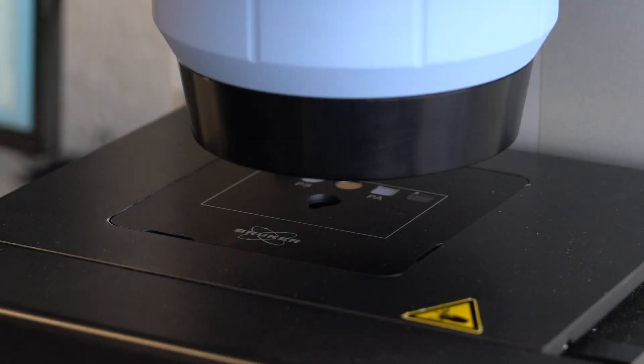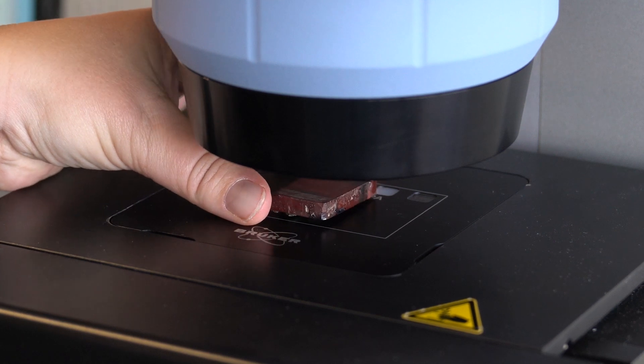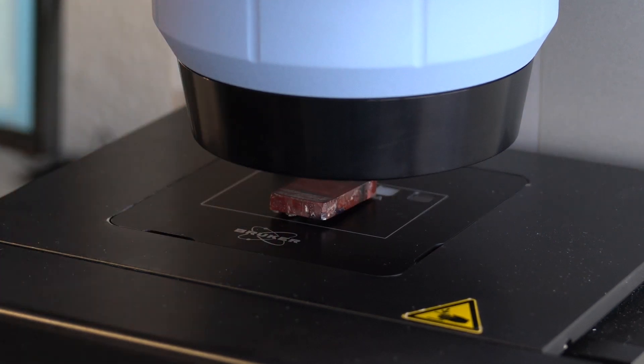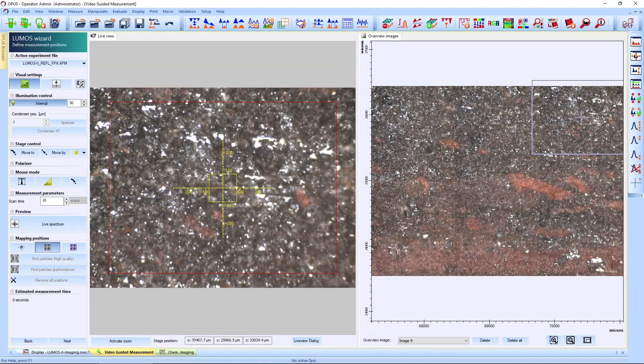Let me demonstrate this with a piece of South African BIF. We simply take the rock section, place it under the Lumos II FTIR microscope, and in less than two minutes, we can start the analysis.